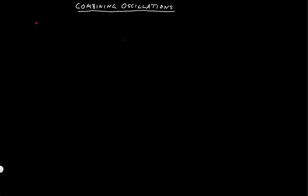I want to talk briefly about how we combine oscillations — how we're going to take two different harmonic oscillators and add them together. In general, we're going to find that psi is equal to A1 cos of omega1*t plus phi1, plus A2 cos of omega2*t plus phi2.